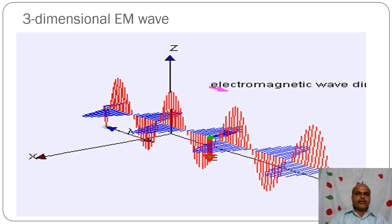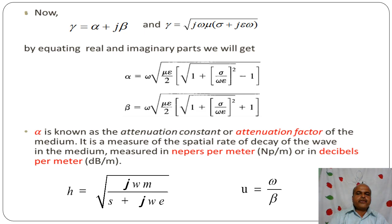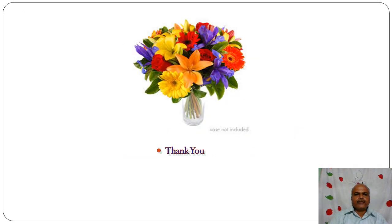This is illustrated with a three-dimensional electromagnetic wave animation. Also, γ = α + jβ, and γ = √(jωμ(σ + jωε)). By equating real and imaginary parts we get values of α and β. Alpha is the attenuation constant or attenuation factor of the medium — it measures the spatial rate of decay of the wave in the medium, measured in nepers per meter or decibels. These formulas were also covered last year.